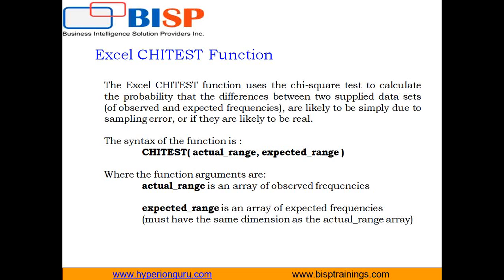For the test of association we will use two Excel functions. The first is the CHITEST function, used to test independence of two variables — it determines whether there is a significant difference between observed and expected frequencies. It takes two arguments: the actual range, which is the data from the actual sample results table, and the expected range, which is the data from the expected results table. Use it when your data are in a contingency table or in group form.